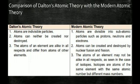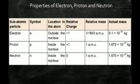Modern atomic theory has revised Dalton's theory. Dalton said atoms are indivisible, but modern theory says atoms are divisible. Dalton said atoms cannot be created or destroyed, but modern theory says they can be in nuclear fusion and fission reactions. Dalton said all atoms of an element are alike, but modern theory recognizes isotopes — atoms of the same element that differ in some properties.